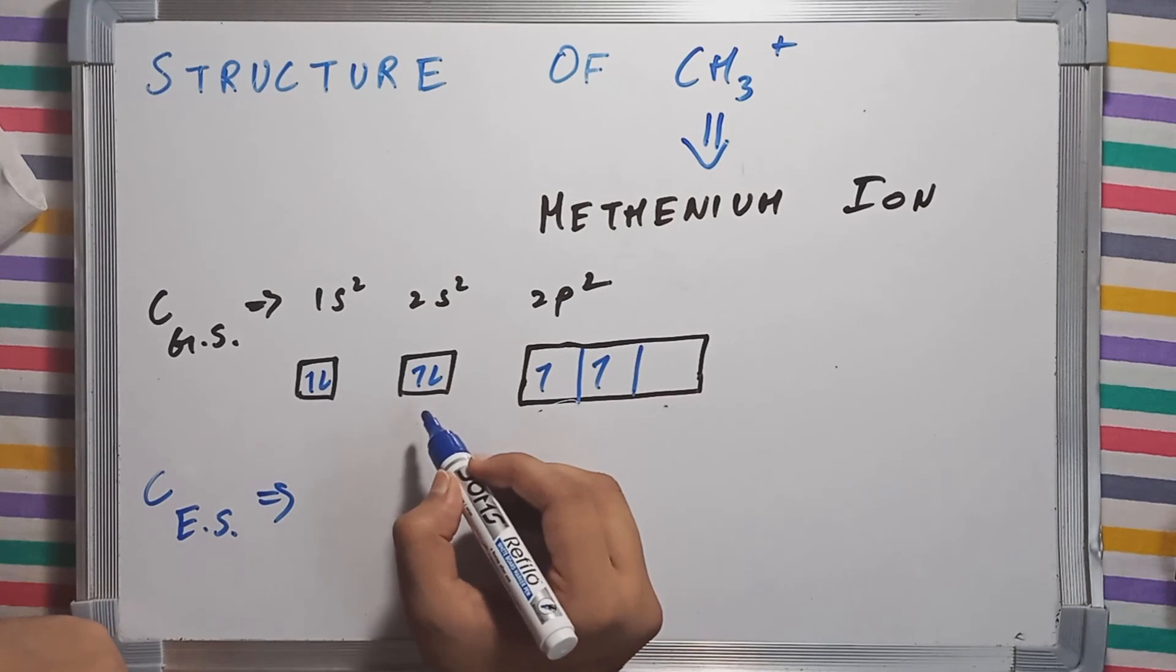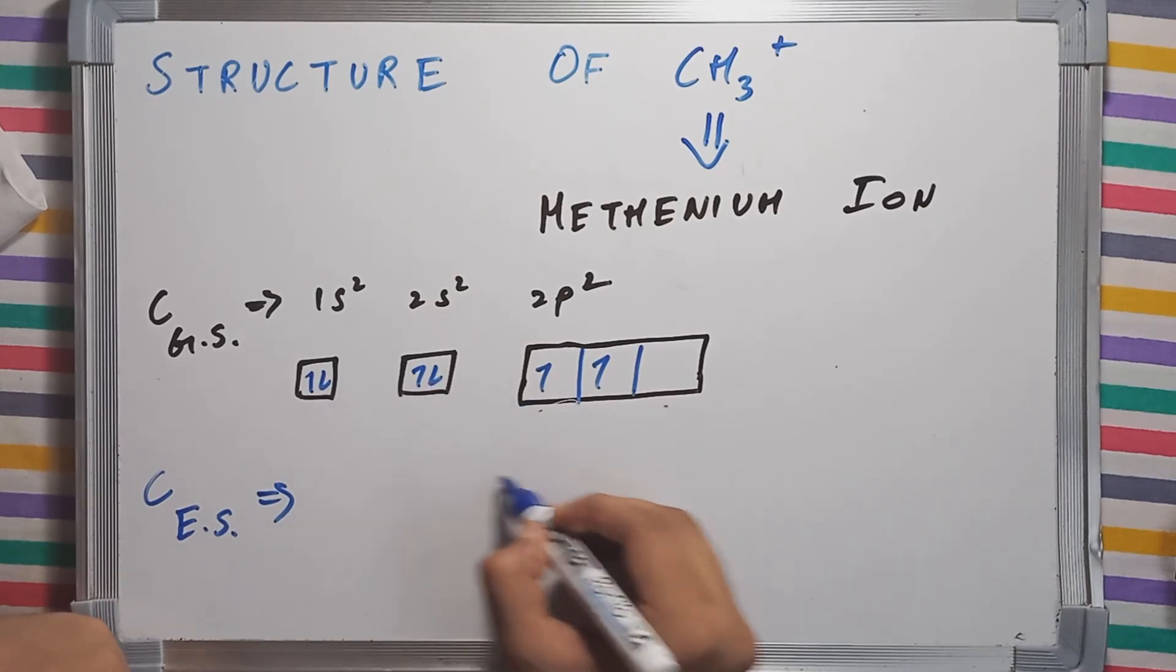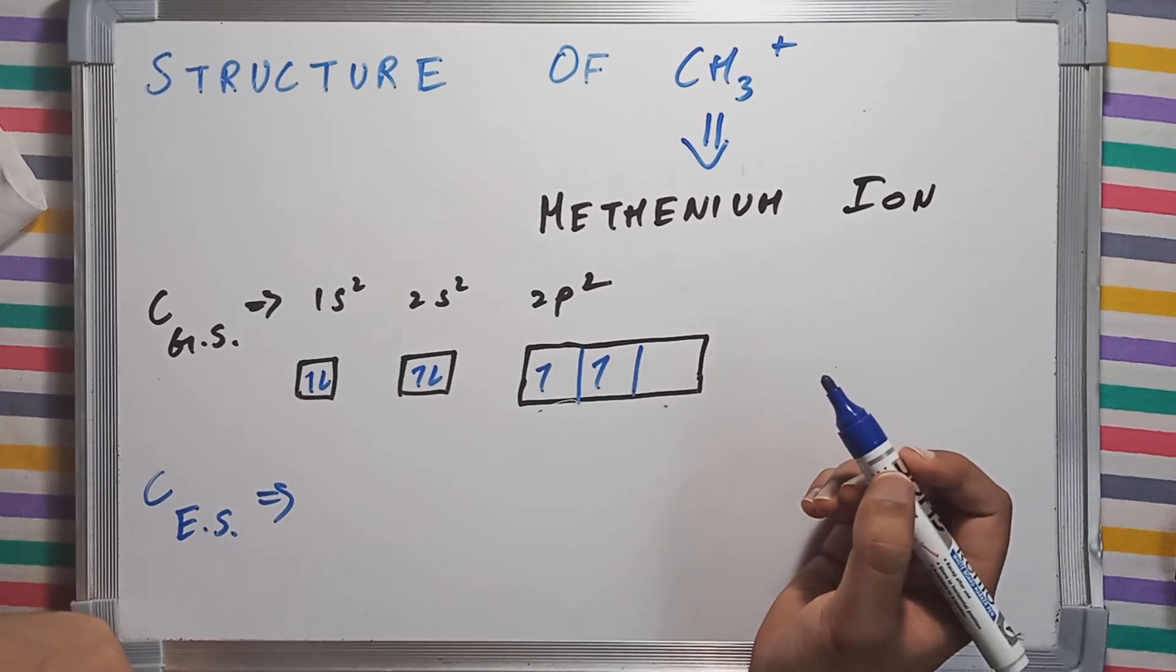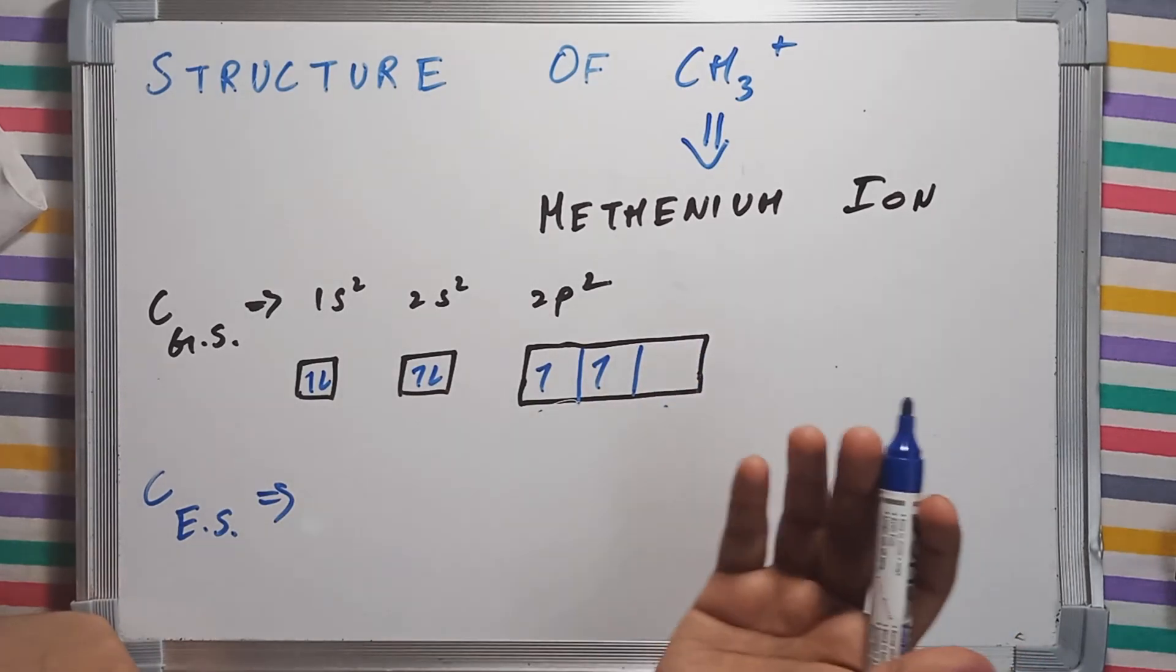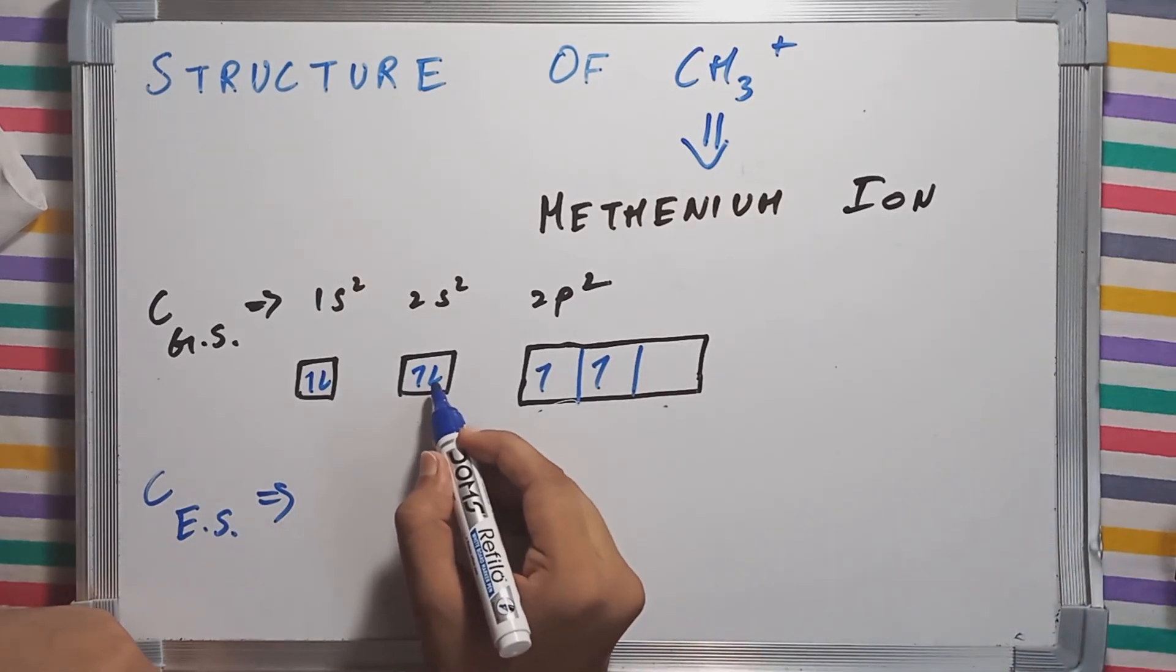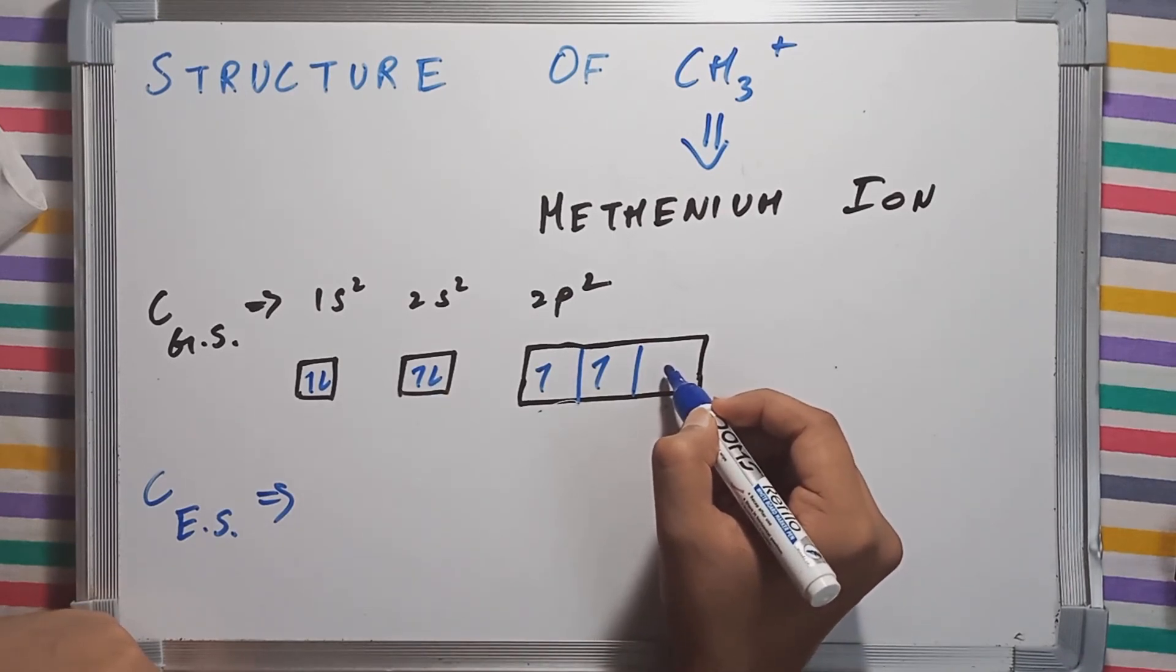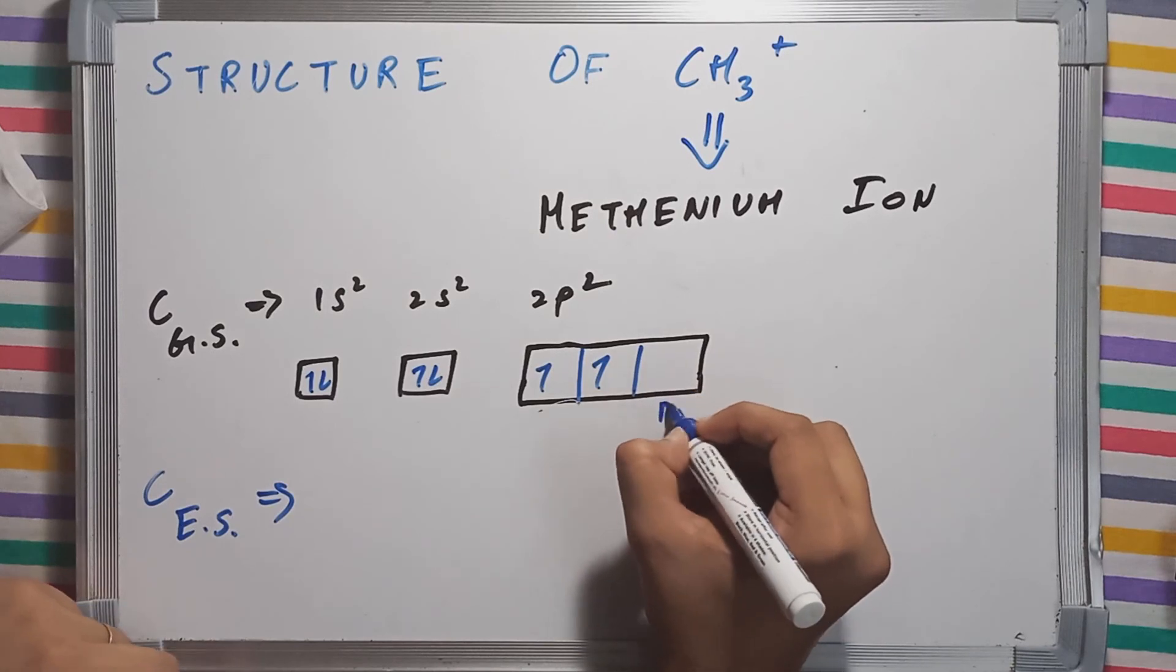What happens is that one of the electrons from 2s shifts or jumps to the 2p subshell. Or as I should say, one of the electrons jumps from one of the orbitals from the 2s subshell to one of the orbitals of the 2p subshell. The Pz subshell.